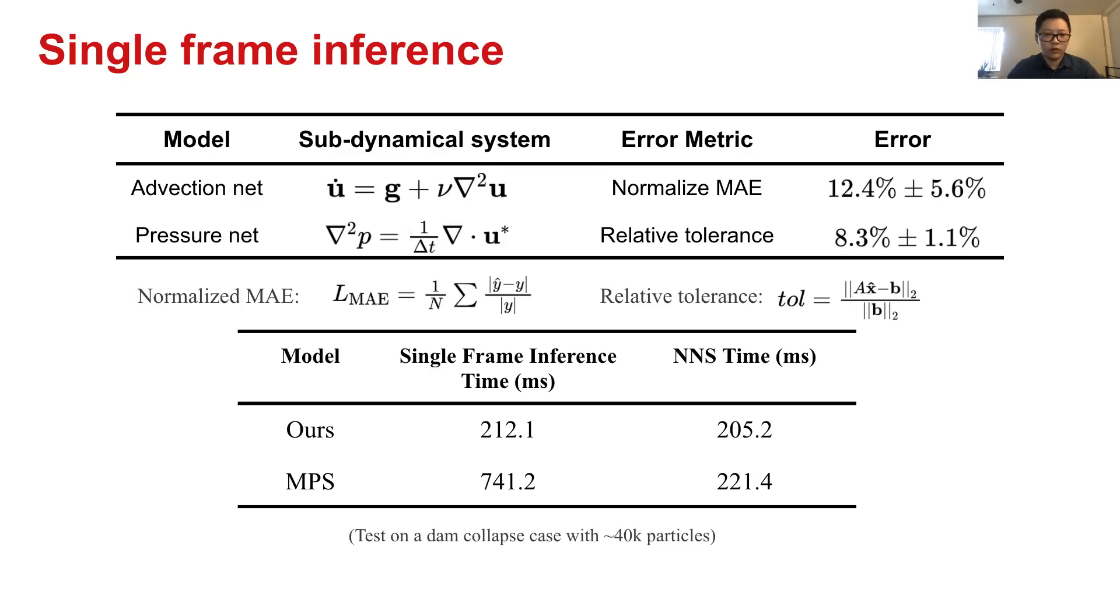And most importantly, we want to know how much efficiency we have gained after building this data-driven model. We also benchmark single-frame inference time. Totally in general, the single-frame inference time of our model is about 200 milliseconds a frame. And for MPS, that's about 700 milliseconds.